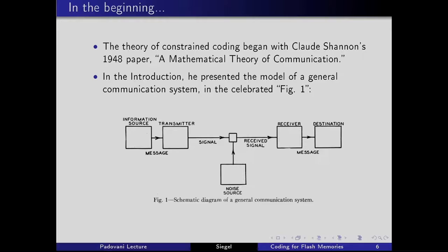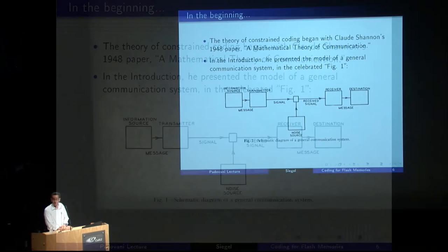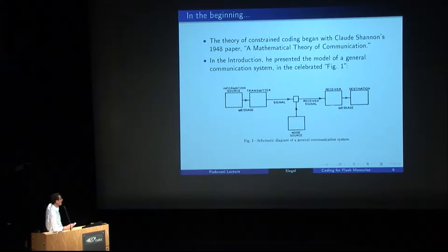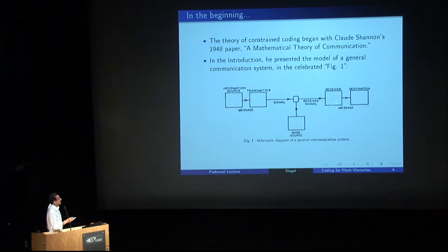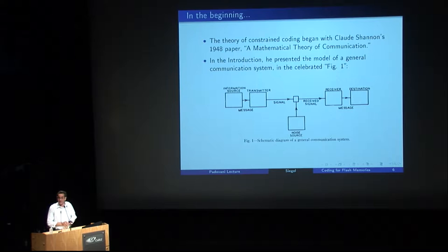Constrained coding really got started in Shannon's original 1948 work, 'A Mathematical Theory of Communication.' In the introduction he presented the famous model of a general communication system — a message transmitted from an information source through a channel with noise, hopefully reaching the destination with the help of a receiver. This canonical figure is often referred to simply as 'figure one.'